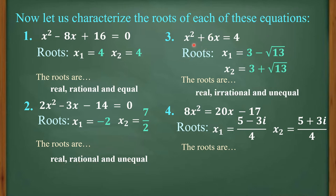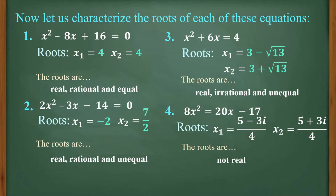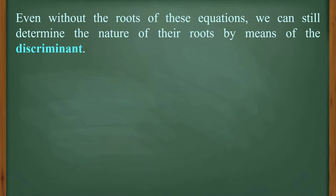For number 3, x squared plus 6x equals 4, we have 2 roots: 3 minus square root of 13, and 3 plus square root of 13. The roots are real, irrational, and unequal since they have different signs. For number 4, 8x squared equals 20x minus 17, the 2 roots are 5 minus 3i all over 4 and 5 plus 3i all over 4. Even without solving for the roots, we can still determine the nature of roots by means of the discriminant.